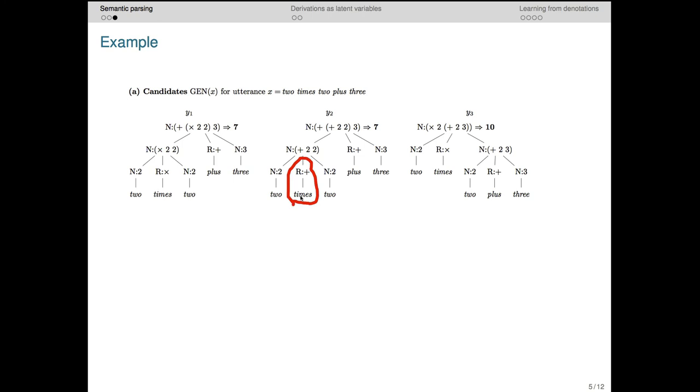For this example, we can't detect this in the output denotation, because 2 times 2 and 2 plus 2 are equal. But the logical forms are different in a way that we would like to detect. And we assume just for this example that the correct logical form is y1. That is, we assume that it's the form that we saw in the training data.